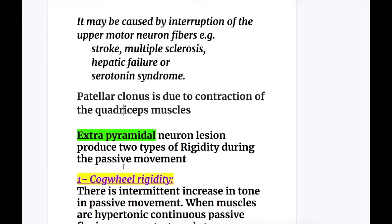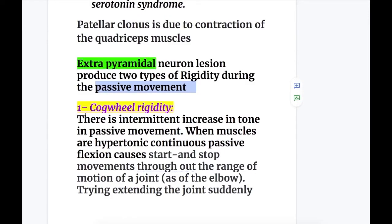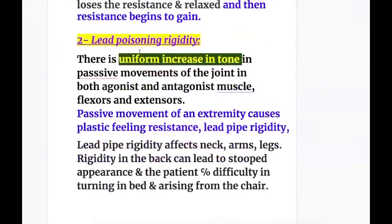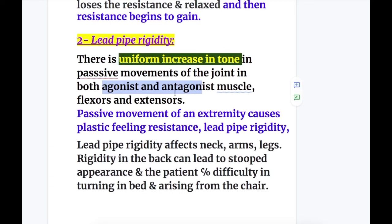Extrapyramidal tract lesions produce two types of rigidity during passive movement. Number one is cogwheel rigidity. In cogwheel rigidity, there is intermittent increase in tone during passive movement. When muscles are hypertonic, continuous passive flexion causes start-and-stop movements throughout the range of motion of a joint such as the elbow — resistance is felt, then it relaxes, then resistance begins again. Number two, lead pipe rigidity: there is a uniform increase in tone during passive movement of the joints in both agonist and antagonist muscles. Both flexors and extensors are rigid, giving a uniform increase in tone — that is known as lead pipe rigidity.